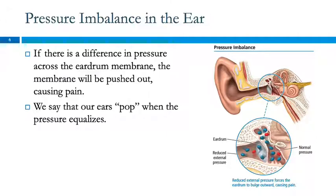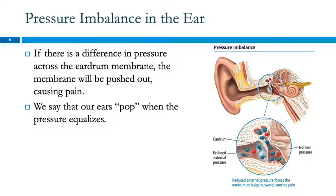If you have a bad cold or an ear infection, that pressure imbalance can be excruciating. Babies tend to cry on airplanes — not to make you miserable, but because their ears hurt. Babies have even smaller eustachian tubes, so it's harder for their ears to equalize. When you come back down, the reverse happens: outside pressure becomes greater, your eardrum bulges the other way, and you need to let air back into your inner ear.